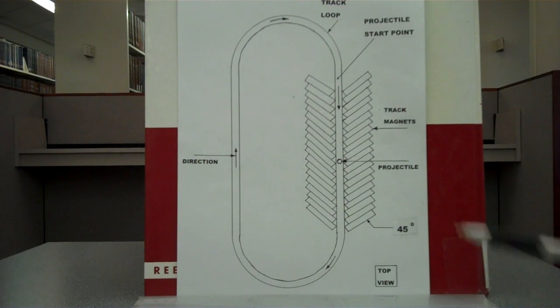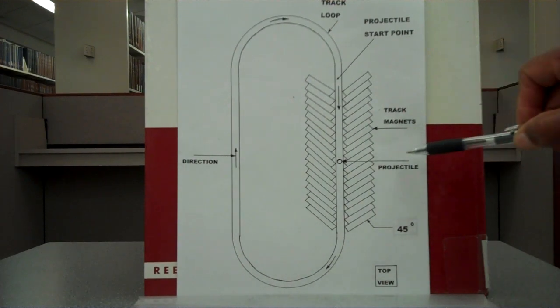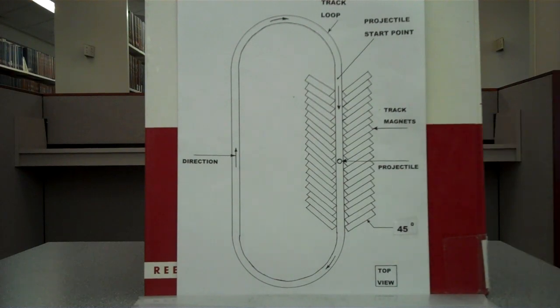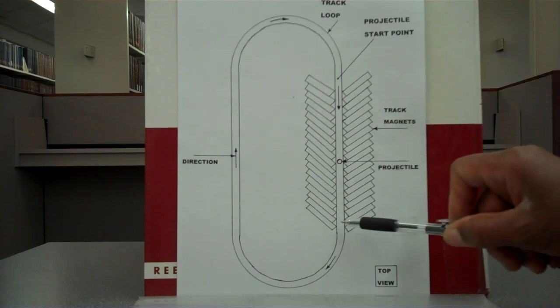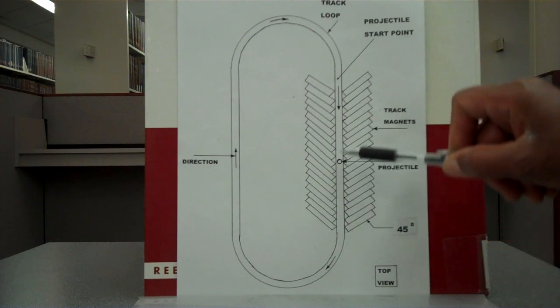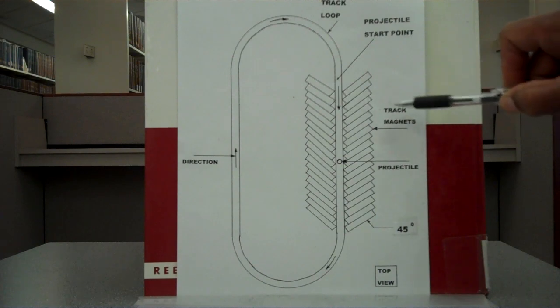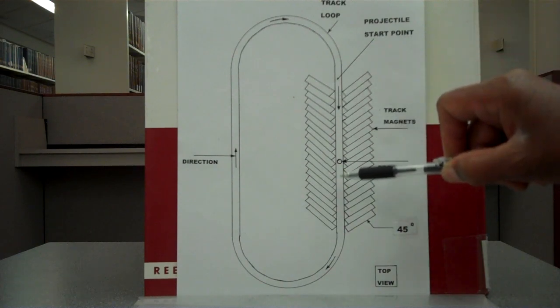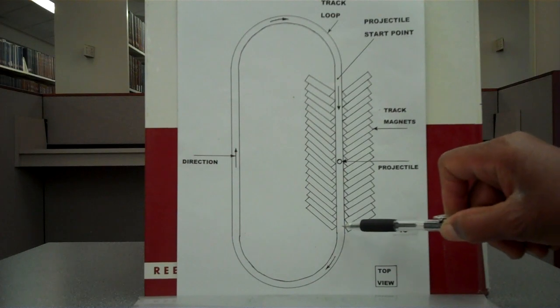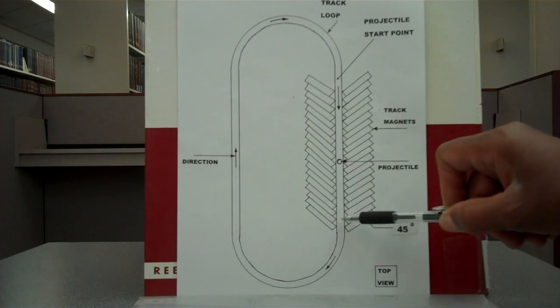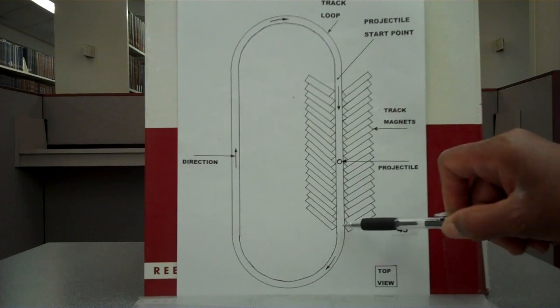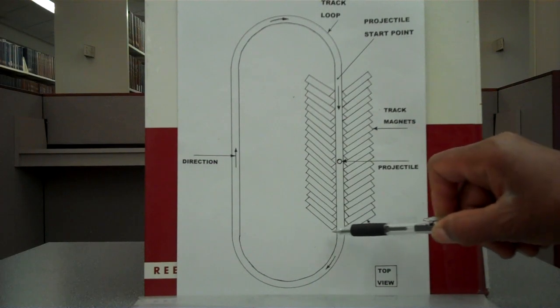Now, this is the magnetic projectile. When it is accelerated from the projectile start point by the track magnets, it starts to go around the track, builds momentum, and exits. This is the exit point right here.